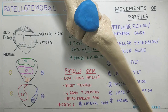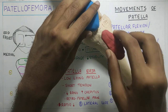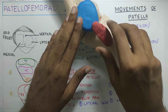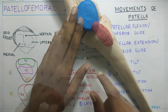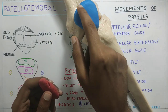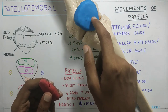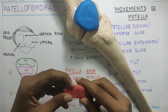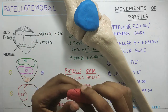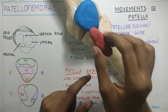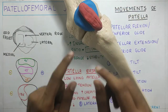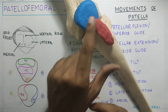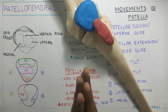The patella lies in between the femoral condyles and is attached to the tibia by the patellar tendon. The Insall-Salvati ratio is the ratio between the length of the patella and the length of the tendon — they should be equal for the ratio to be 1:1.